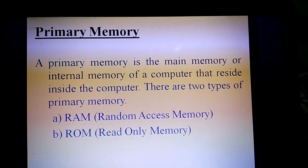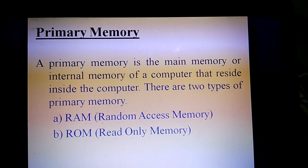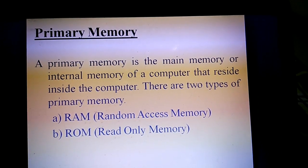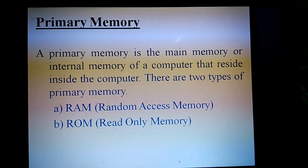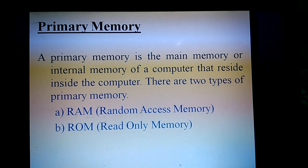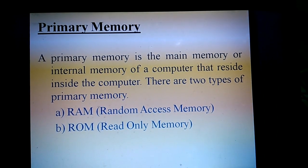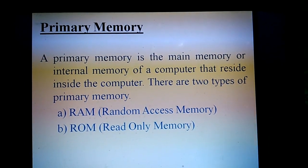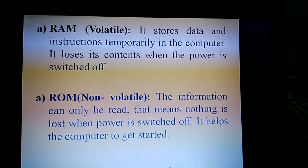The first type of memory is primary memory. Primary memory is the main memory and we also call it the internal memory of a computer — it resides inside the computer. There are two types of primary memory: the first is RAM, which stands for Random Access Memory, and the second is ROM, which stands for Read-Only Memory.